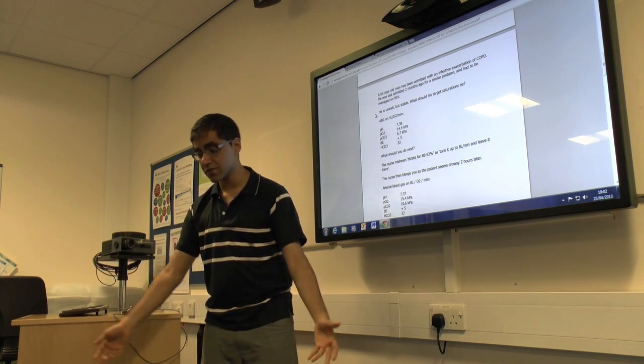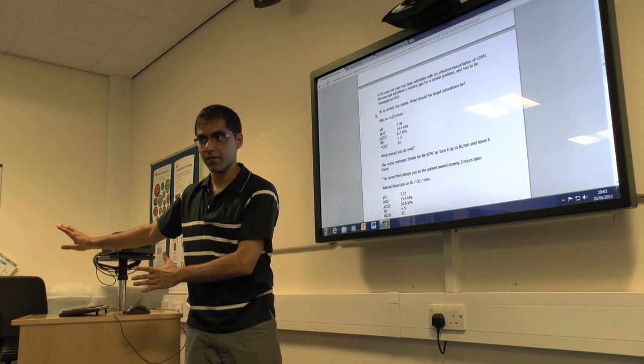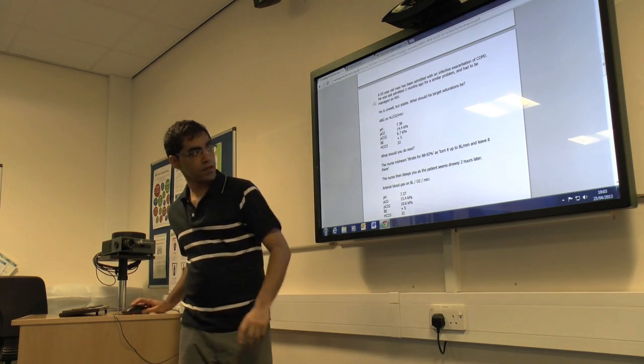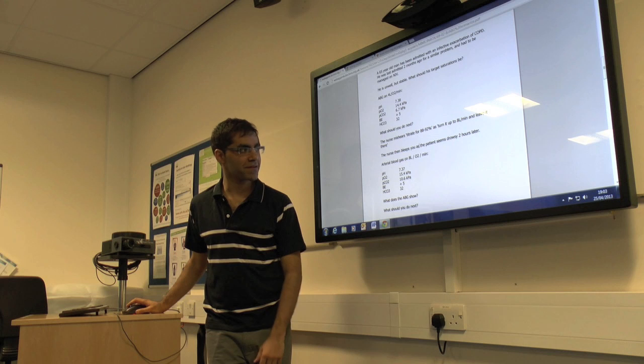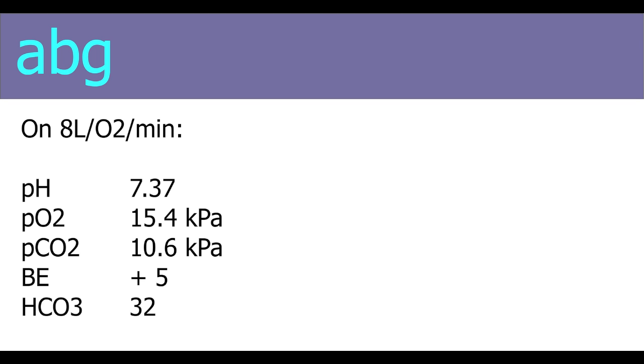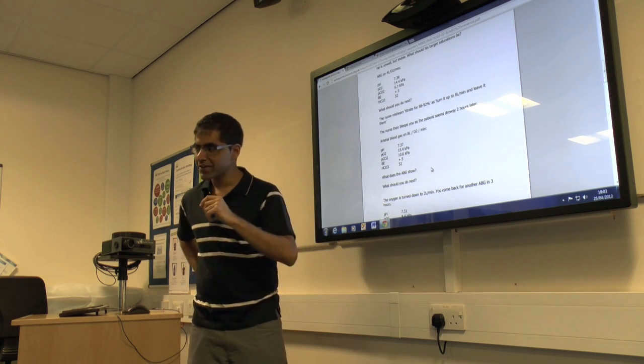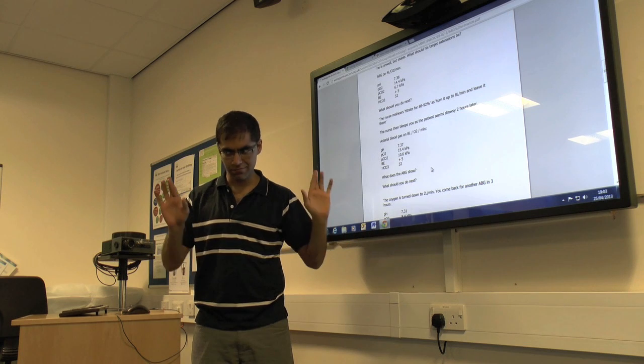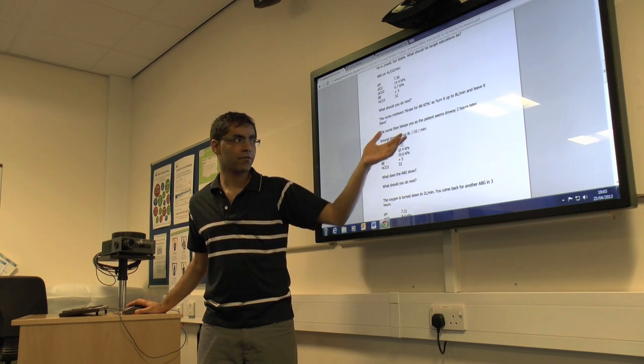If you get an ABG, if you've got no history, a patient comes unconscious, and you see that their PCO2 is high but they've compensated ridiculously well, even sometimes they can still be alkalotic, it can go really far the other way. It makes you suspicious this is a patient who's long-term retaining CO2. So when you said titrate to 88 to 92, the nurse misheard that as turn it up to 8 litres and leave it there. Happens. The nurse then bleeps you as the patient seems drowsy two hours later. Arterial blood gas on 8 litres is like this. Worried, not worried? Worried. Yeah, maybe a bit more. But the pH is actually okay. So yeah, it's stupid and you need to turn the oxygen down, but I'm not terrified. The patient's actually going to be okay. So it's gone up, we can see what's happening, it does kind of support the hypothesis this guy is oxygen sensitive.